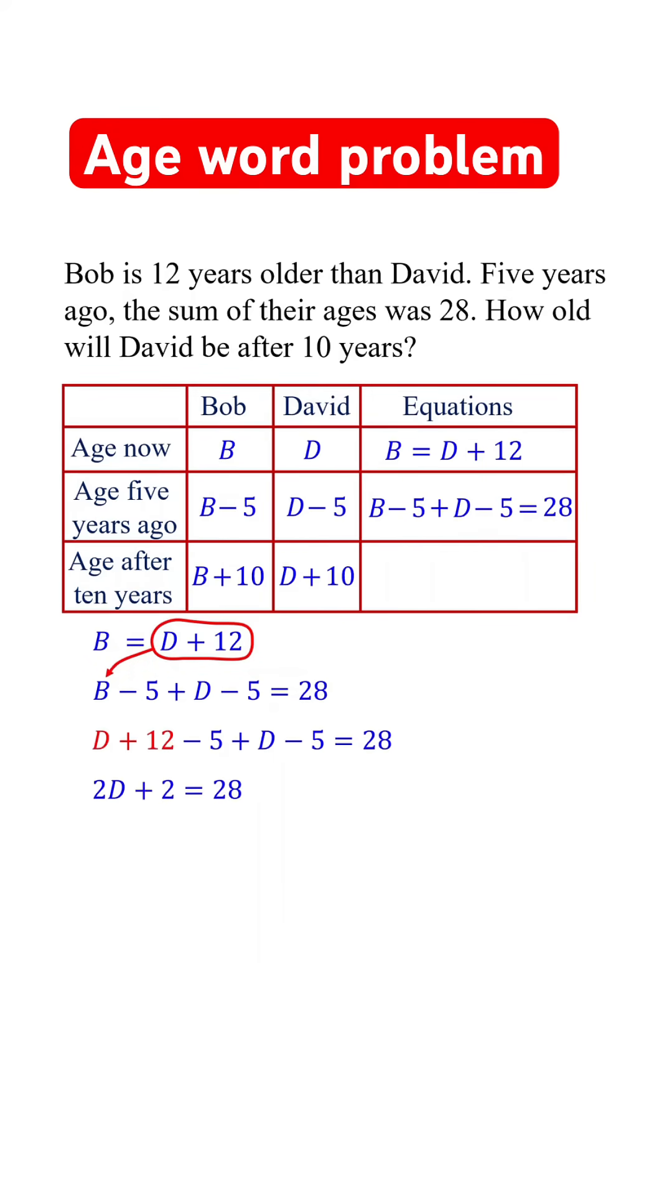Combine like terms. Subtract 2 from each side of the equation. Then divide both sides of the equation by 2.